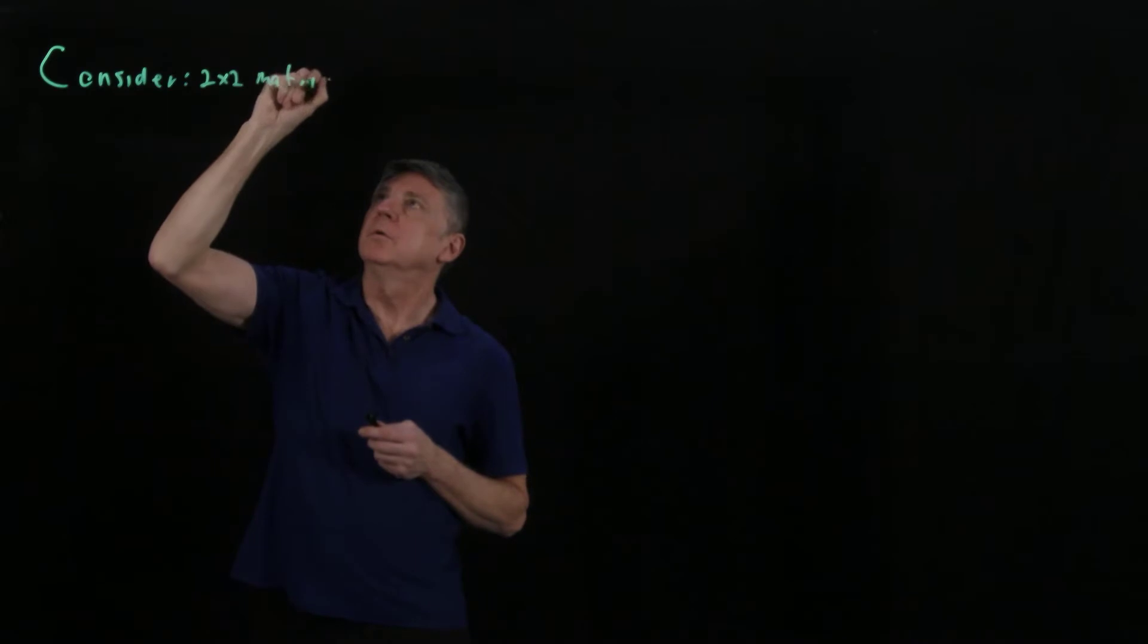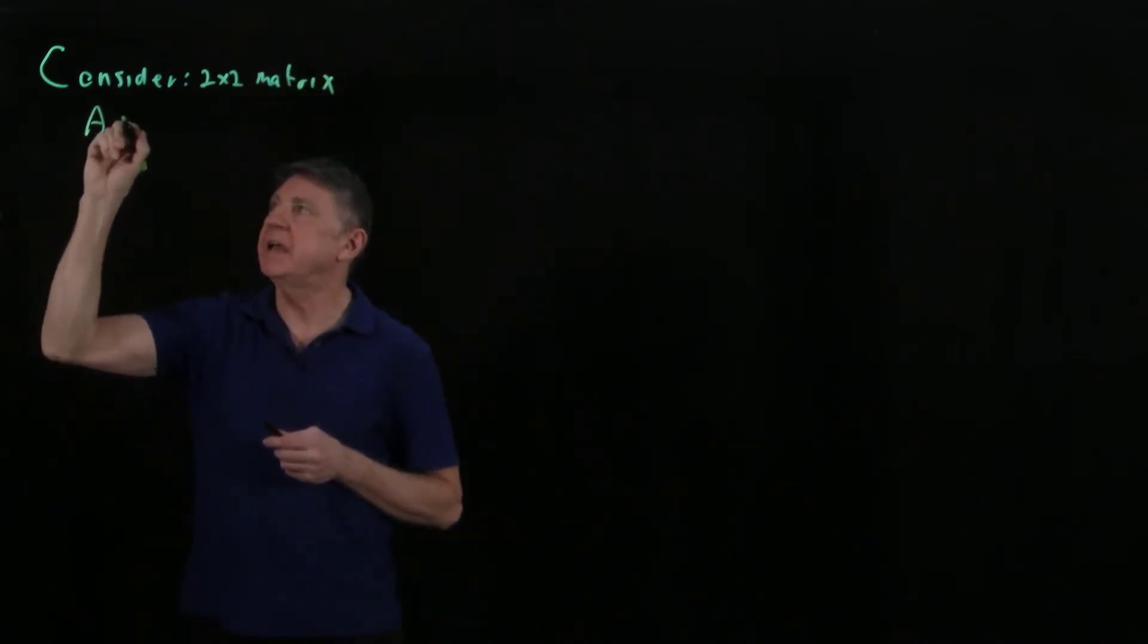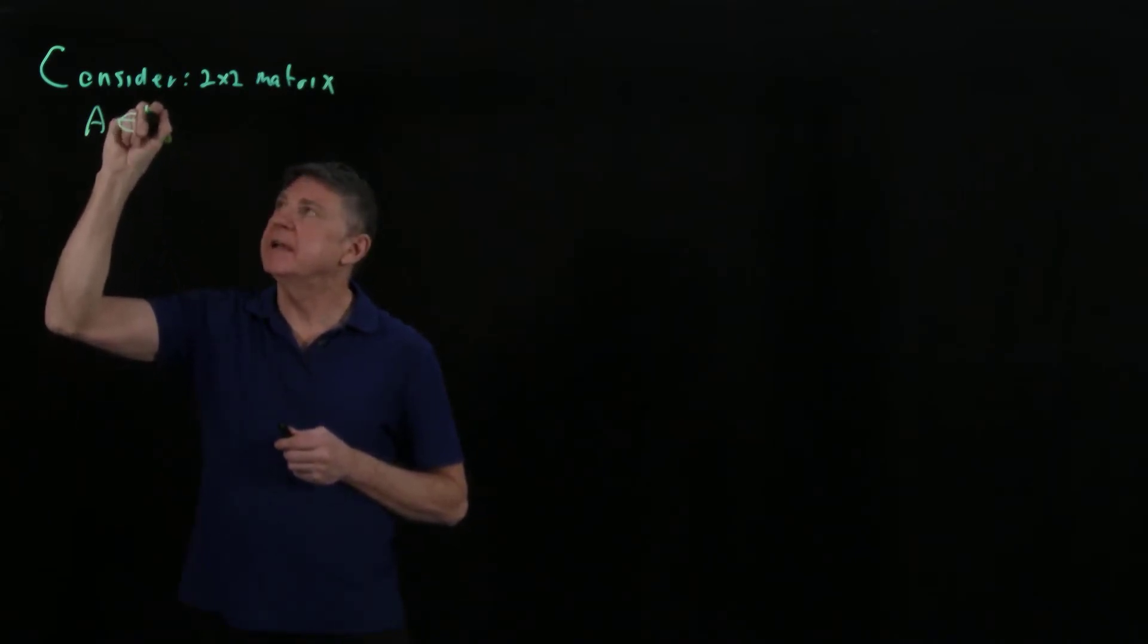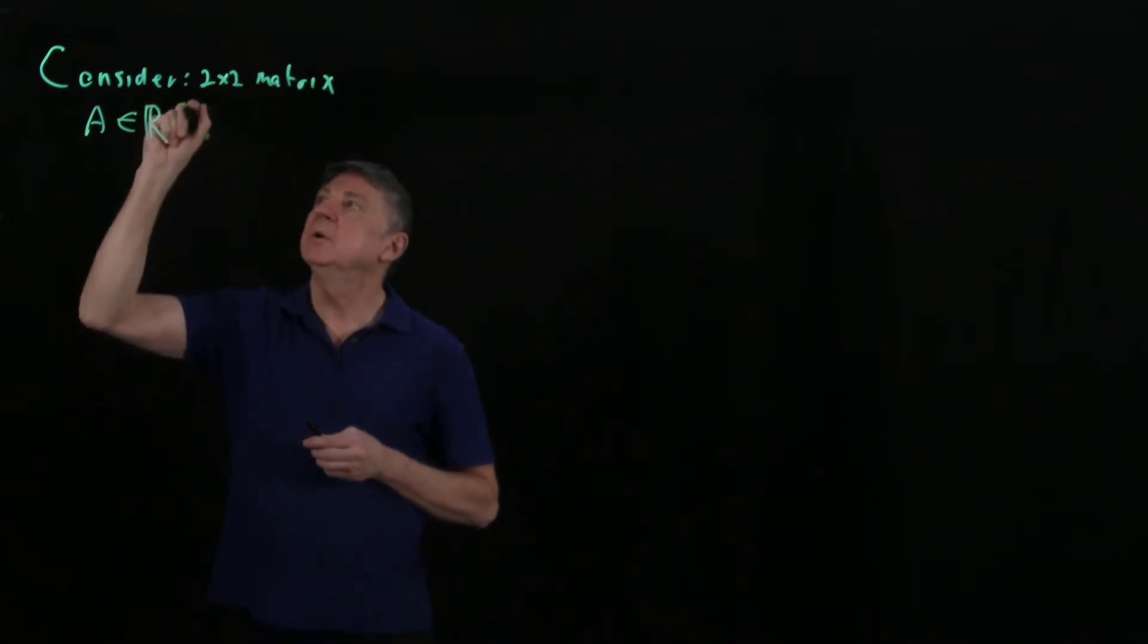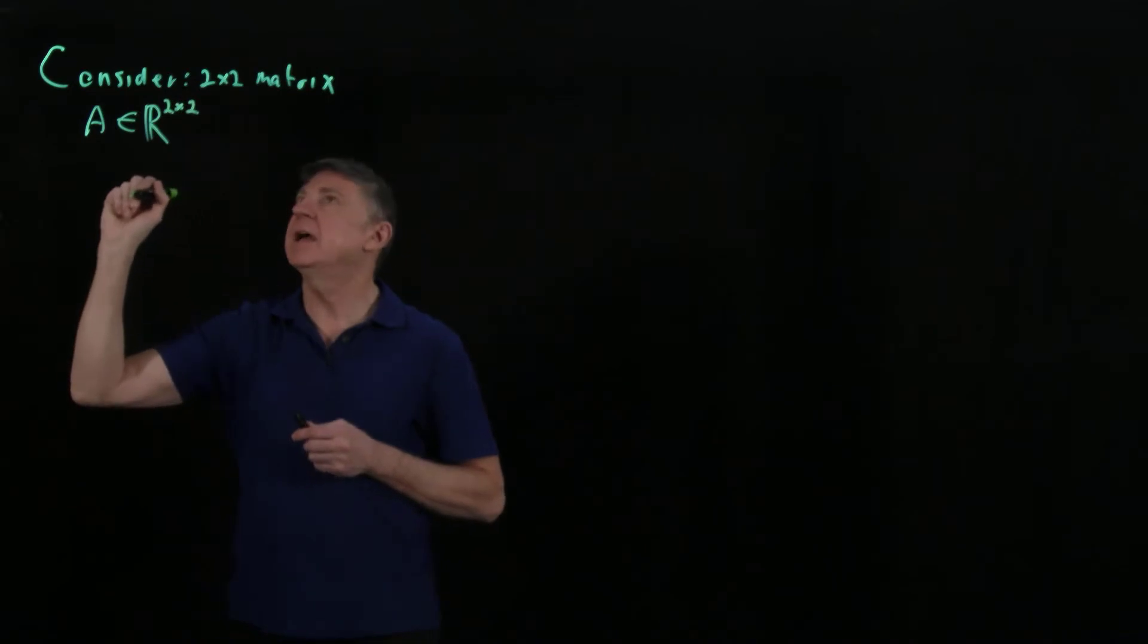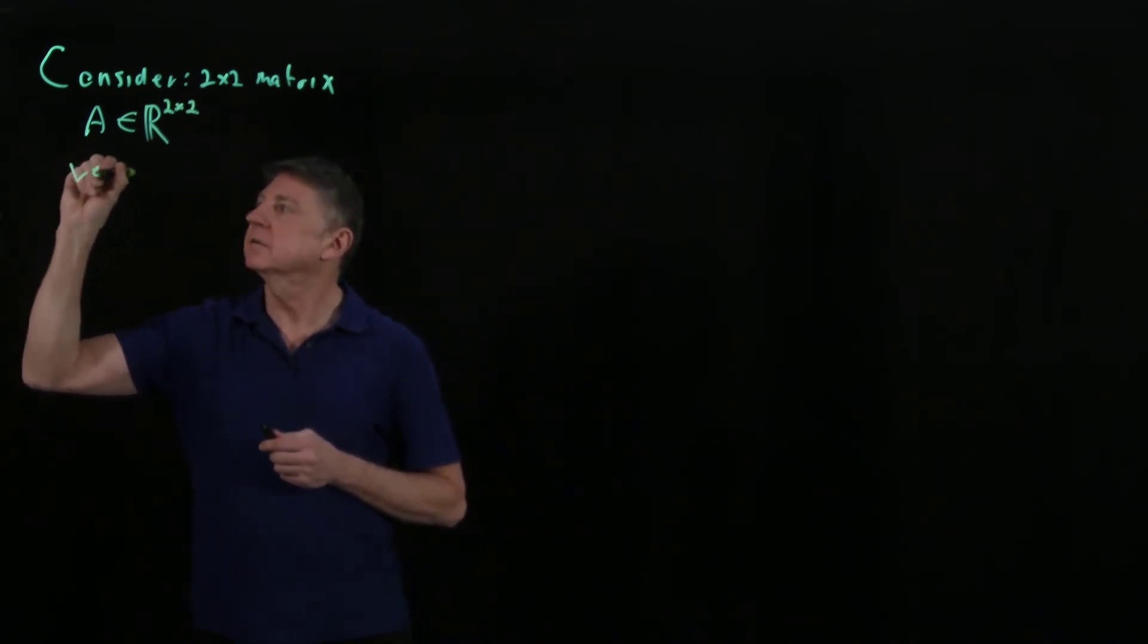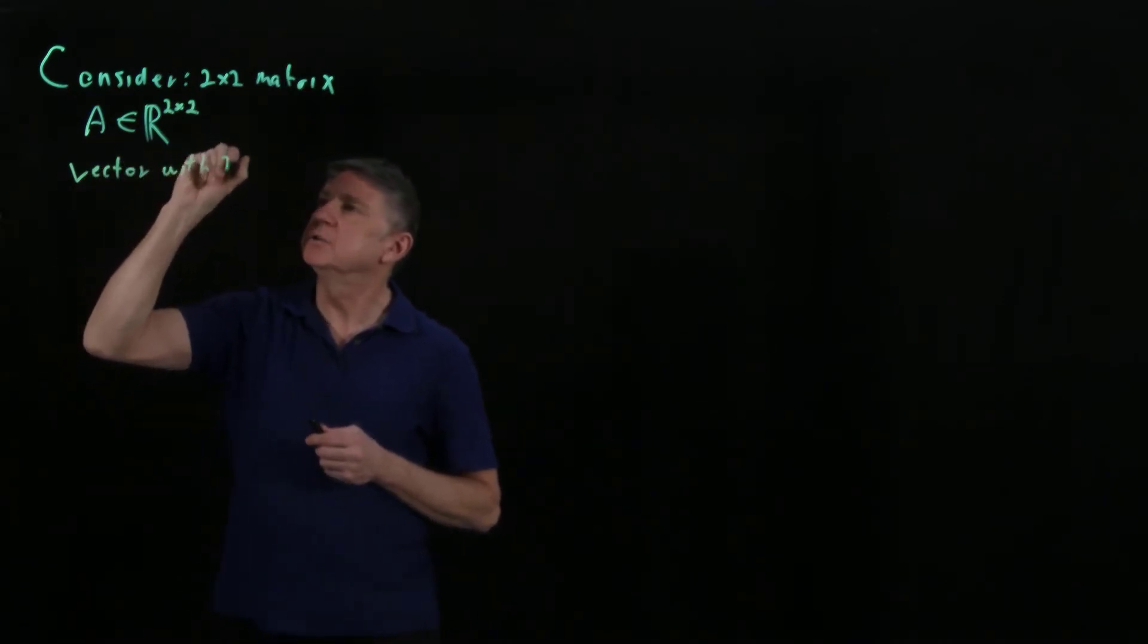And the way that we'll write this is we'll write this as a matrix A, and our notation throughout the course will be we'll say that A has entries that are real numbers, and then we'll indicate in a superscript the size. So it will have two rows, it will have two columns.